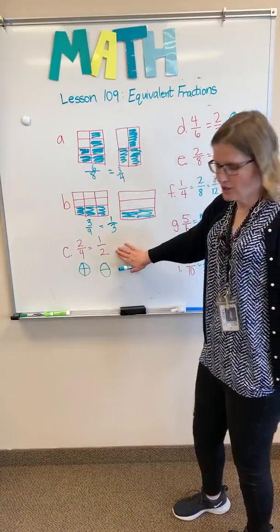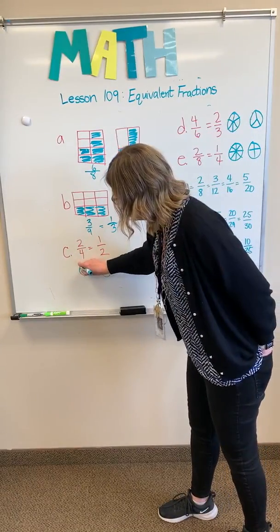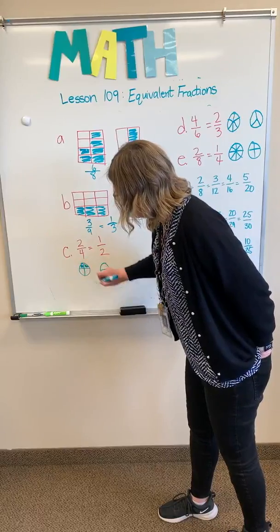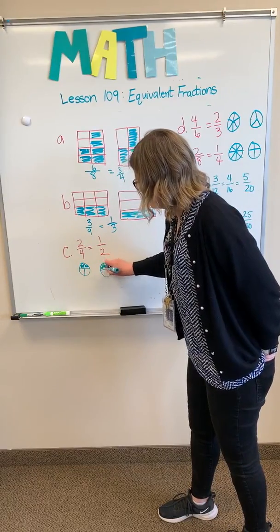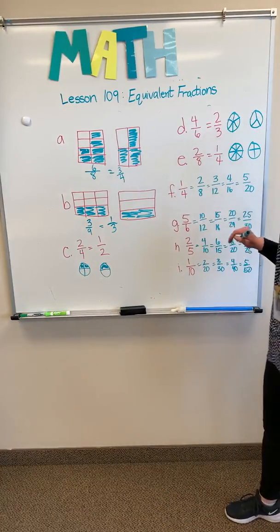For the following, they want you to shade in 2 fourths and 1 half. So it looks like that. You can see that it is equivalent.